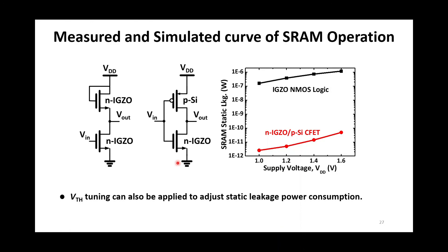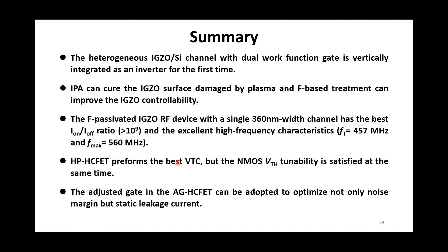In conclusion, the heterogeneous IGZO silicon channel with dual-function gate is vertically integrated as an inverter for the first time, without any bonding and CMP process. IPA can cure the IGZO surface damage by plasma and fluorine passivation treatment can improve the IGZO controllability. The fluorine-passivated IGZO RF device with a single 360 nm wide channel has the best on-off ratio and excellent high-frequency characteristics because of low capacitance and controlled carrier concentration.